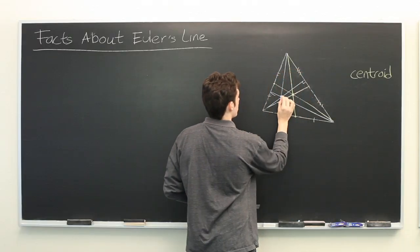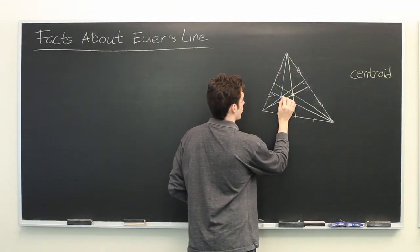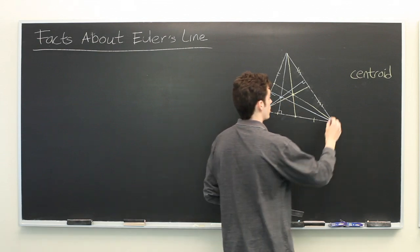And again, we see that these three lines intersect at a single point. This is known as the orthocenter.